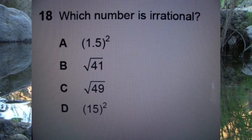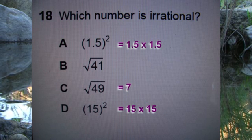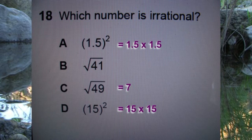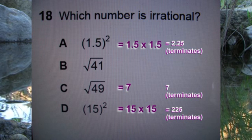On your scratch paper, you set it up to do the math. A is 1.5 times 1.5. Choice C, the square root of 49 equals 7 exactly. And choice D, 15 to the second power is 15 times 15. Once you solve that, you will see that 1.5 times 1.5 is 2.25 — it terminates. 7 also terminates. And choice D, 225, also terminates.